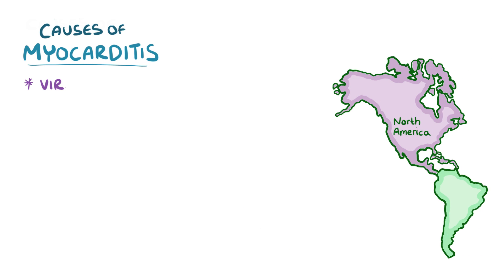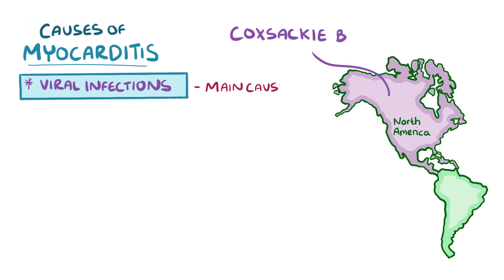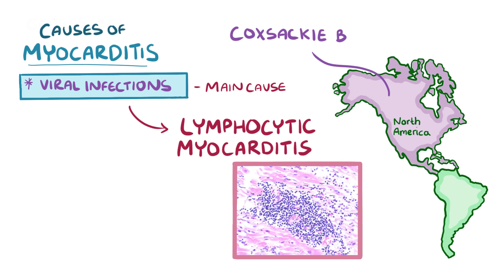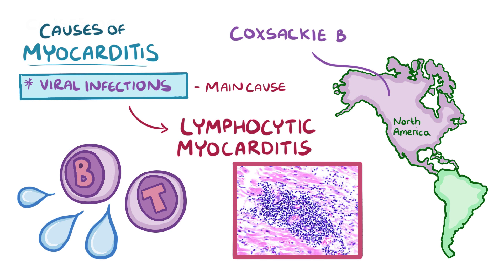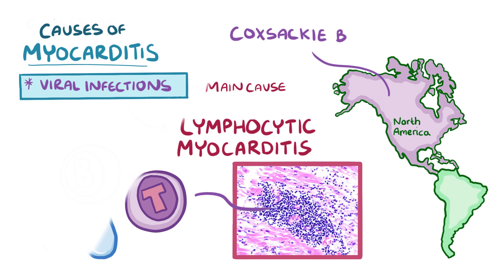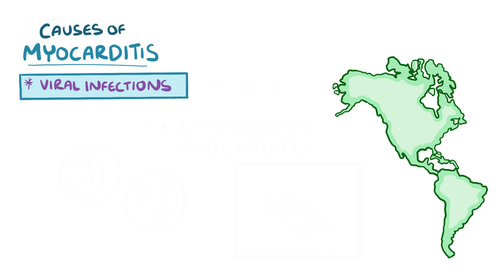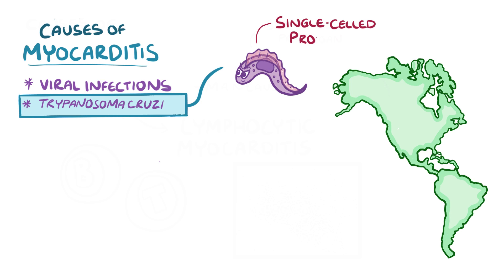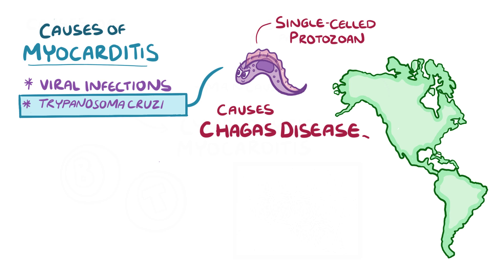In North America, viral infections — specifically Coxsackie virus B — are the main cause of myocarditis. Viral infections can trigger lymphocytic myocarditis, which is when lymphocytes (the B and T cells of the immune system) make their way into the interstitial space between heart muscle cells. There are plenty of other infectious causes as well, including Trypanosoma cruzi, a single-celled protozoan that causes Chagas disease throughout South America.